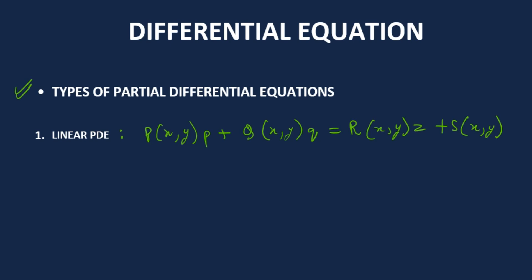As an example of the linear partial differential equation, we had something like: y·p minus x·q = x·y·z plus x — something of that form.